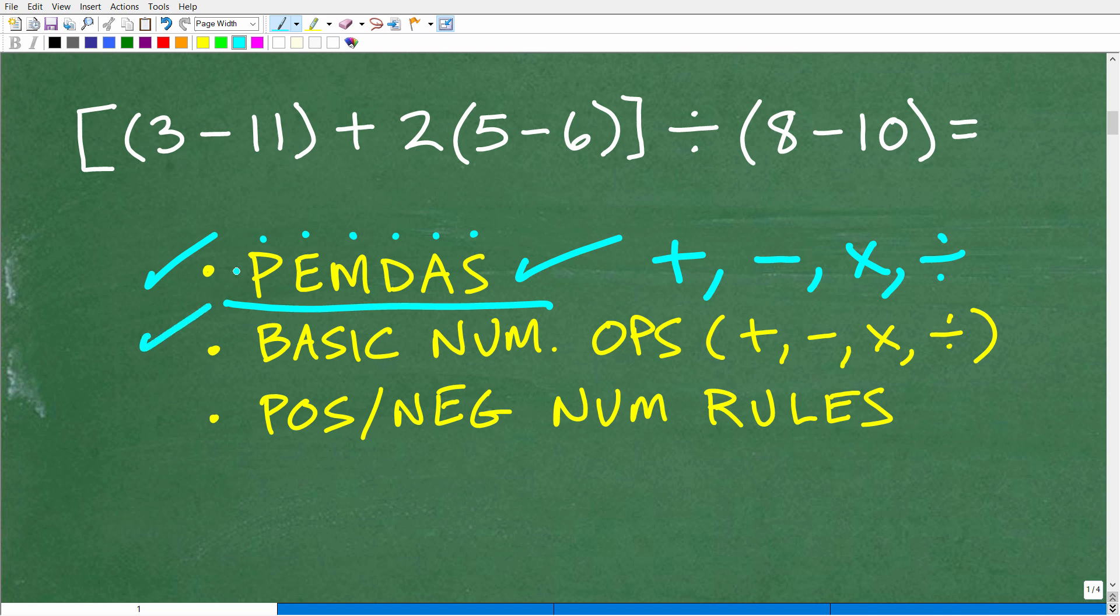The next thing that you need to know is simply working with basic number operations. In other words, can you add, subtract, multiply, and divide numbers without a calculator? The third skill set that you need is you have to be able to work with positive and negative numbers. We're just talking about basic math, and a lot of you learned this stuff at one time, but maybe you forgot this, and that is okay. Let's get into exactly how to do this problem.